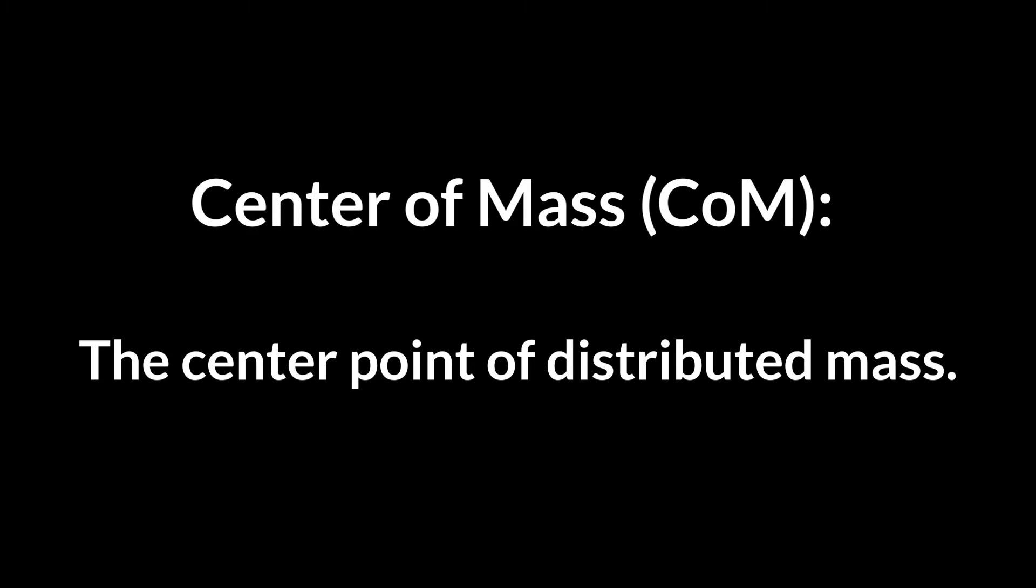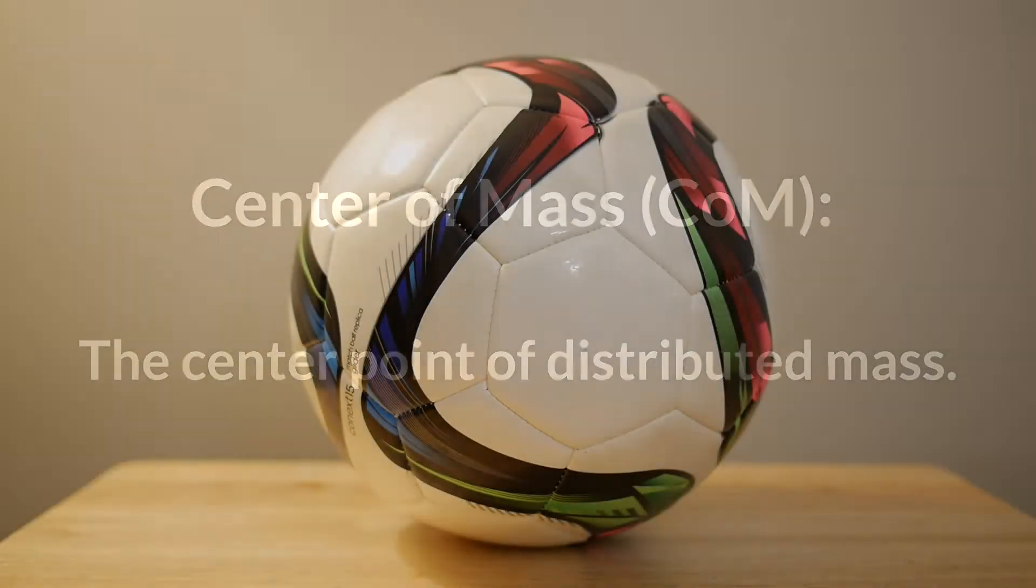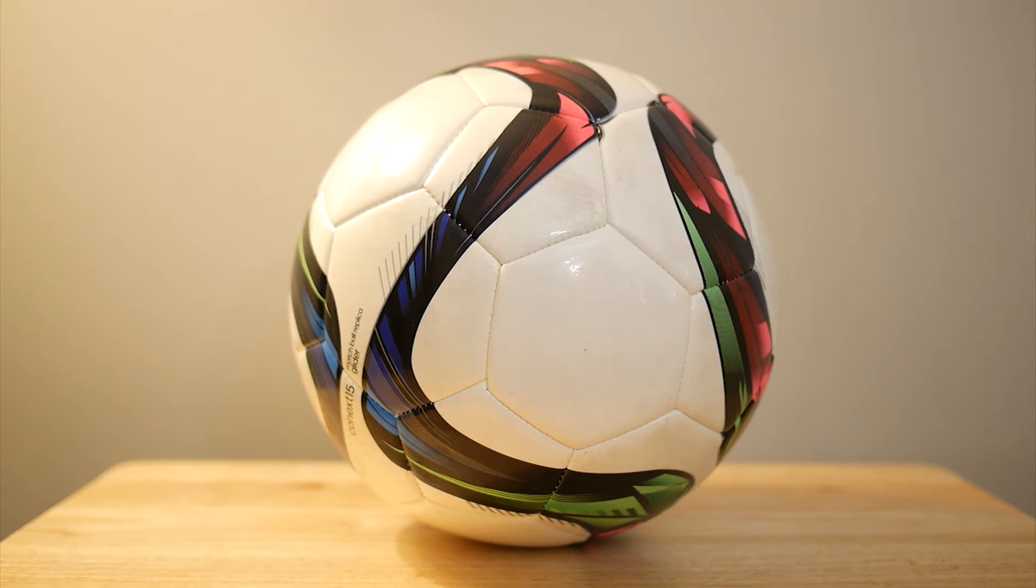Center of mass is the center point of distributed mass. This concept is very useful to simplify and explain the motion of rigid body. For many objects, we can easily find rough location of the center of mass by intuition. For example, the center of mass of this soccer ball is obviously at the center of sphere, with the assumption that the mass distribution is symmetrical around that point.